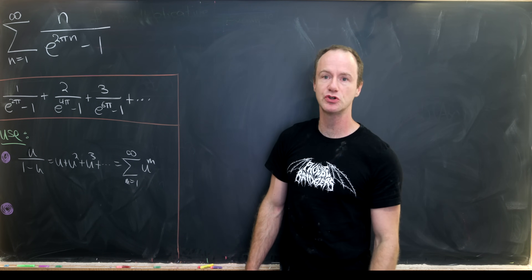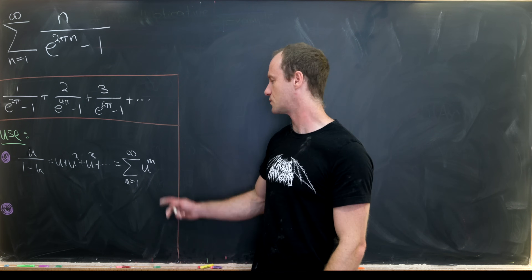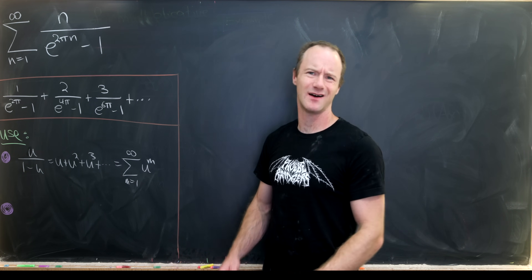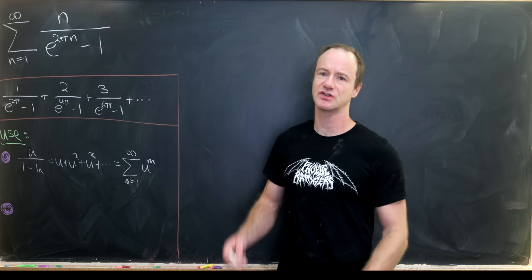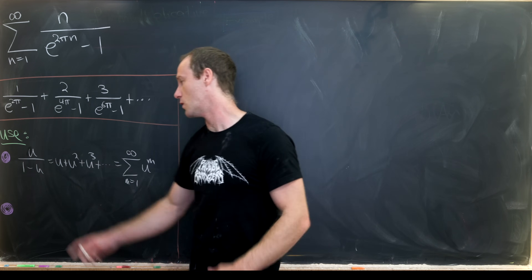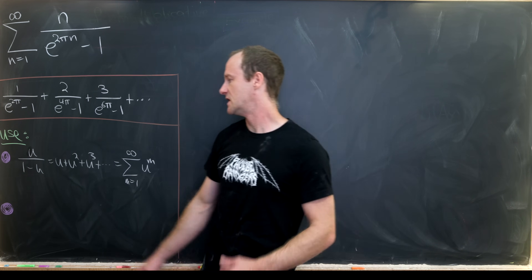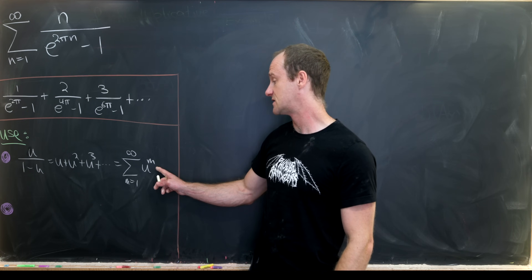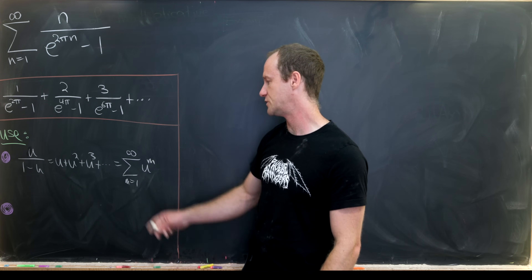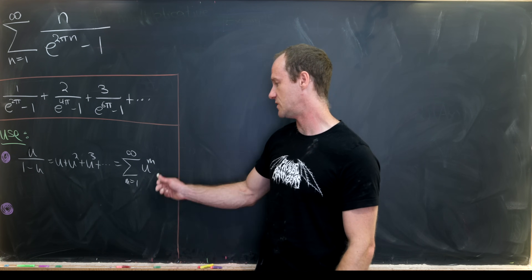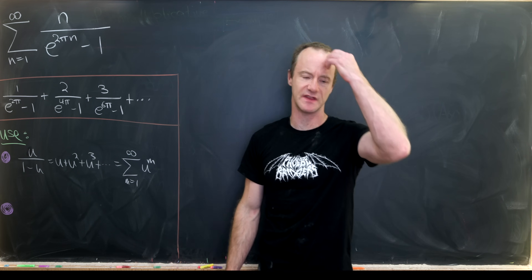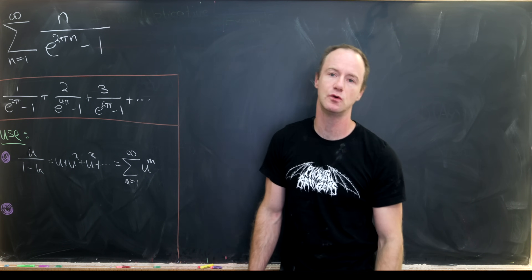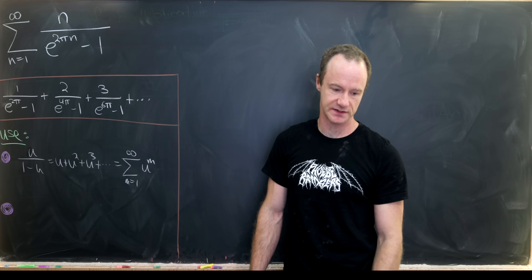We're going to use two tools as we evaluate this sum. One is the standard geometric series, shifted a little bit: u over 1 minus u equals u plus u squared plus u cubed, and so forth. That's the sum as m goes from 1 to infinity of u to the m, and that converges when the absolute value of u is less than 1. We'll reveal the second tool when we get to it.